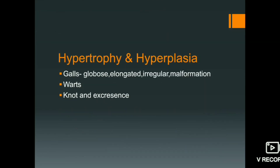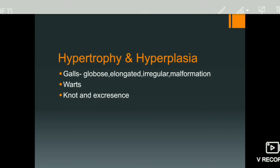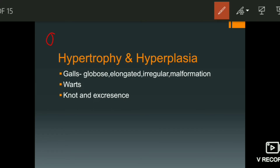Two important terms in plant pathology are hypertrophy and hyperplasia. In hypertrophy, the size of the affected cell increases — the cell enlarges in size. In hyperplasia, the affected cell divides repeatedly, producing many cells. So the difference is: hypertrophy means one cell increases in size, while hyperplasia means the cell divides to produce many cells.